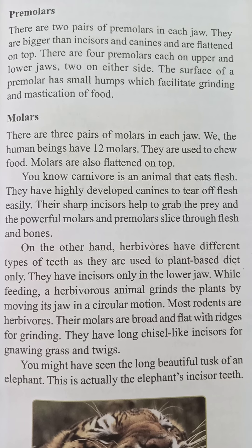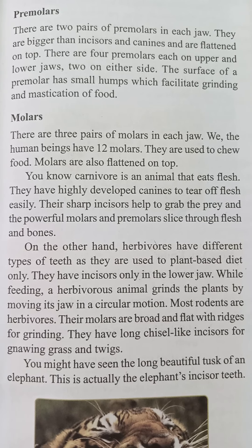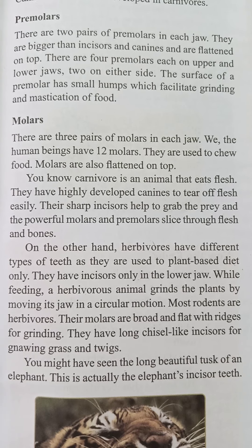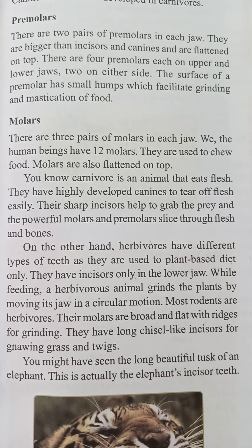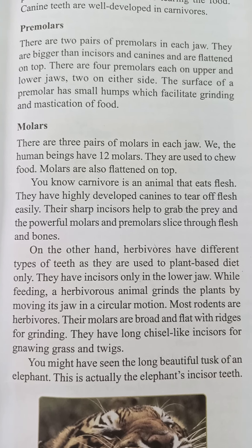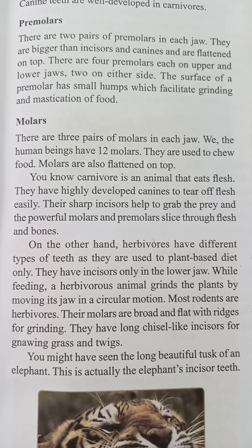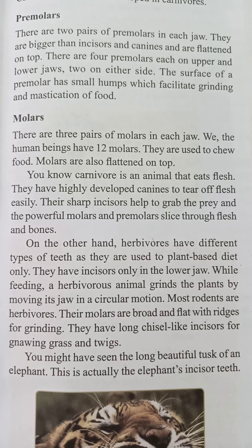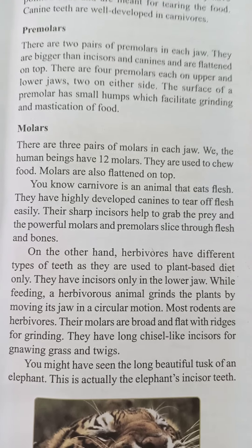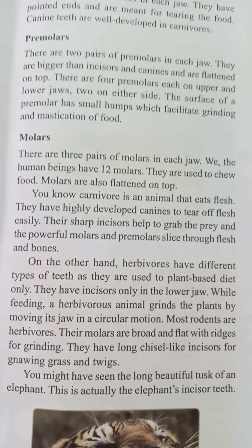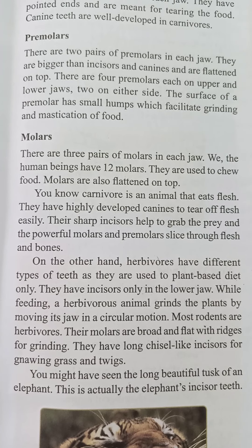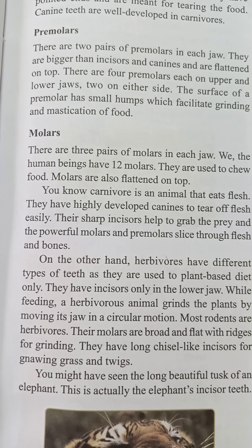Carnivores are animals that eat flesh. They have highly developed canines to tear off flesh easily. Their sharp incisors help to grab the prey, and the powerful molars and premolars slice through flesh and bones.